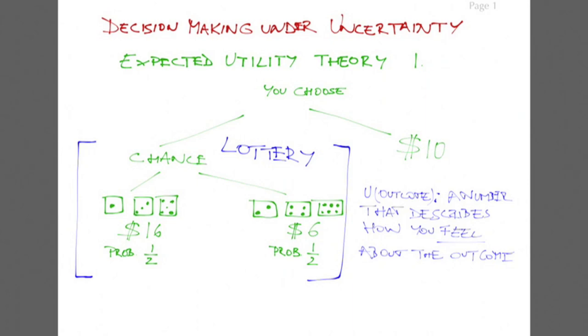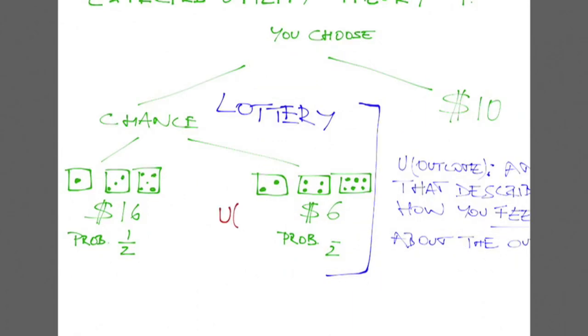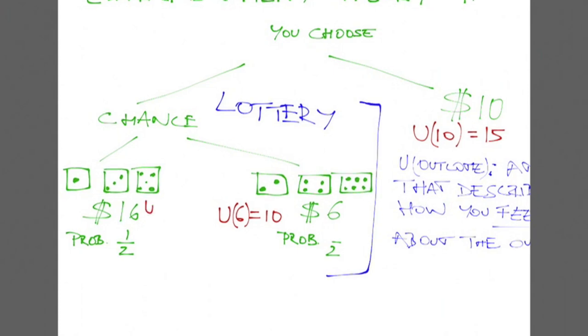Suppose that your utility of getting $6 is 10, your utility of getting $10 is 15, and your utility of getting $16 is 18. Then your utility from just taking the $10 is 15.